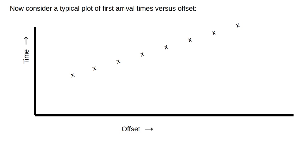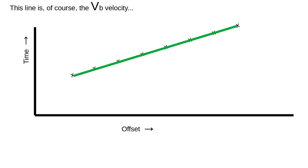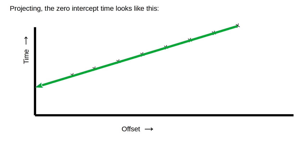Therefore, using the intercept time to derive thickness requires some vector manipulation, which results in the velocity ratio in the equation. Now consider a typical plot of first arrival time versus offset. The line, of course, is the base velocity, and projecting to the zero intercept time looks like this.